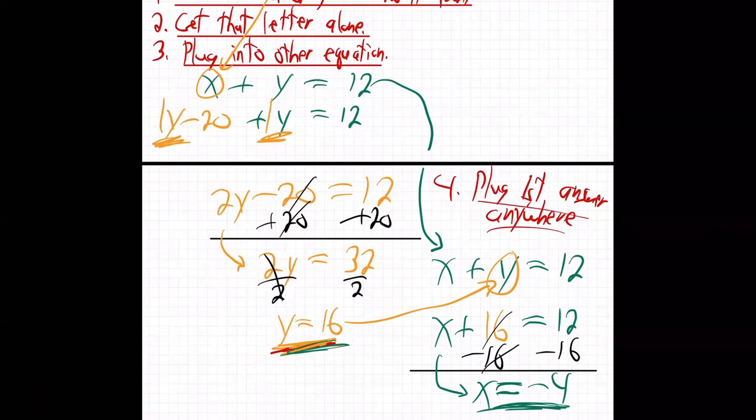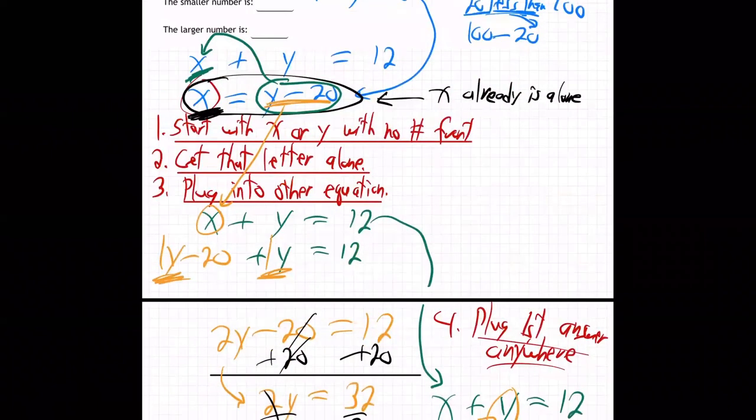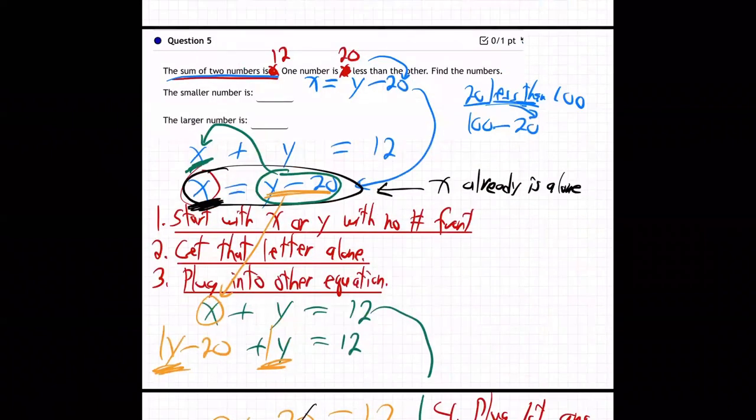So let me recap real quick. So what did we do? We wrote out the equation. The first one, the sum of two numbers is 12, they add to be 12. And then one number is 20 less than this, so X equals Y minus 20. And then X is alone, so plug that in for X and the other equation. X equals Y minus 20, so replace X with Y minus 20.